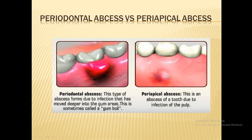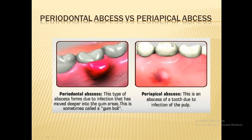In the case of a periapical lesion, percussion is done vertically. You place the back end of the mirror on the occlusal or incisal edge and perform percussion — the patient will feel pain immediately. So the tooth is tender to percussion especially vertically for periapical lesions, and tender to percussion especially laterally for periodontal lesions.